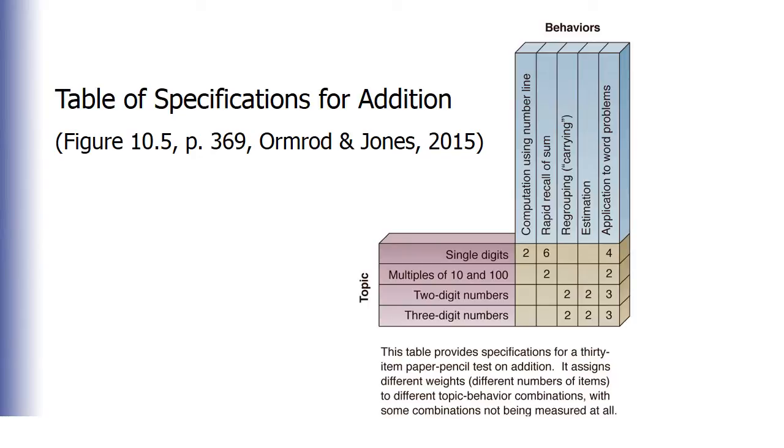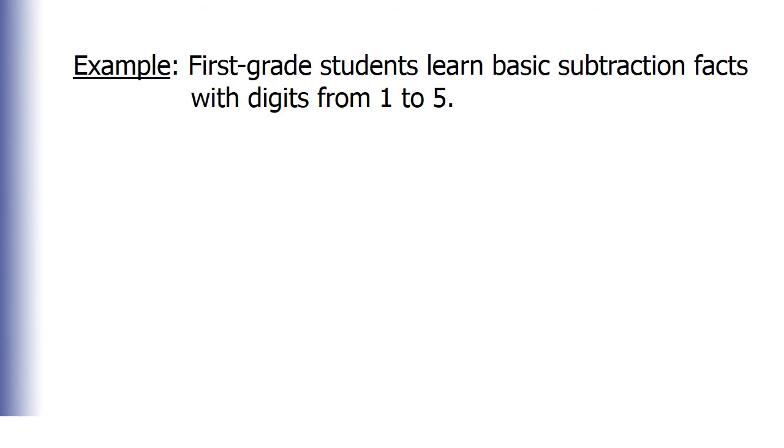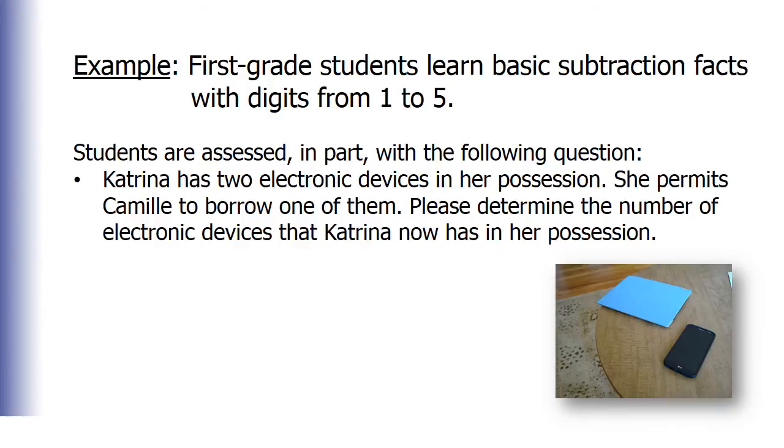Let's move on to another quiz for you. In this example, first grade students learn basic addition facts with digits from 1 to 5. Then students are assessed, in part, with the following question: Katrina has two electronic devices in her possession. She permits Camille to borrow one of them. Please determine the number of electronic devices that Katrina now has in her possession. What is the problem with this assessment? Pause the video if you need to think about it.